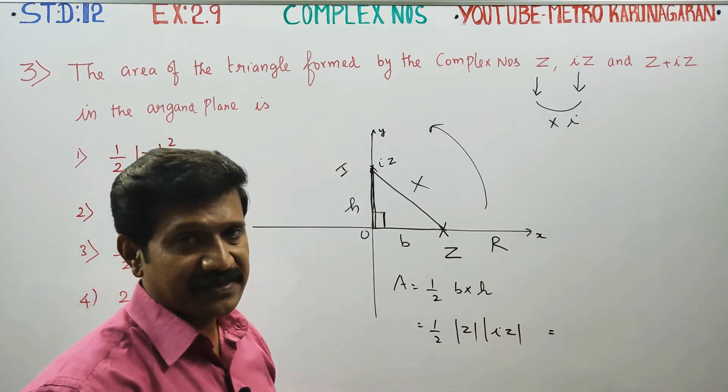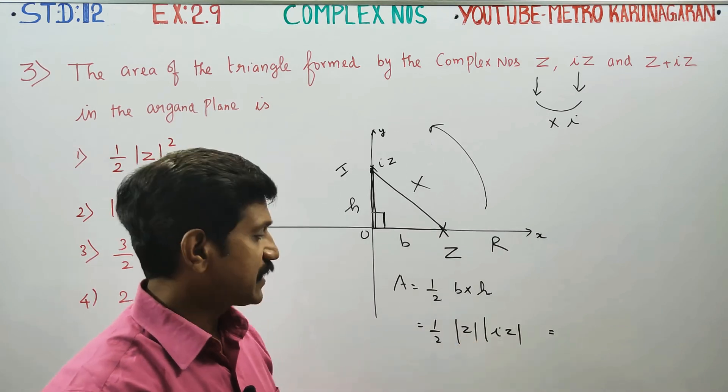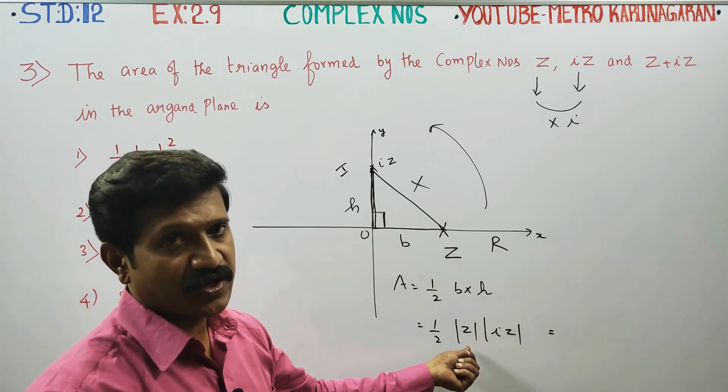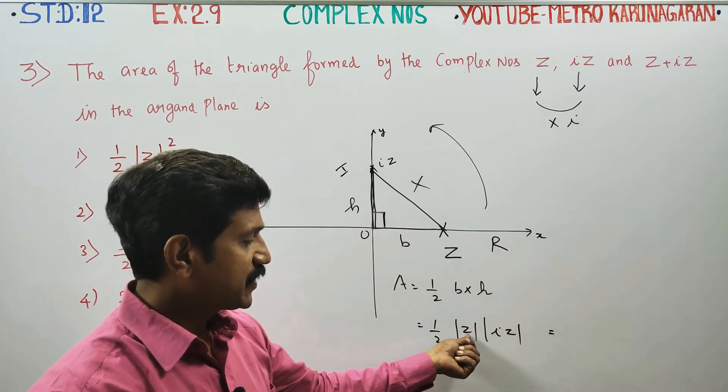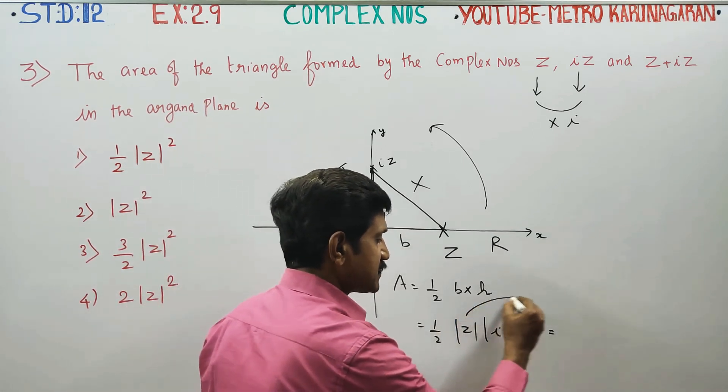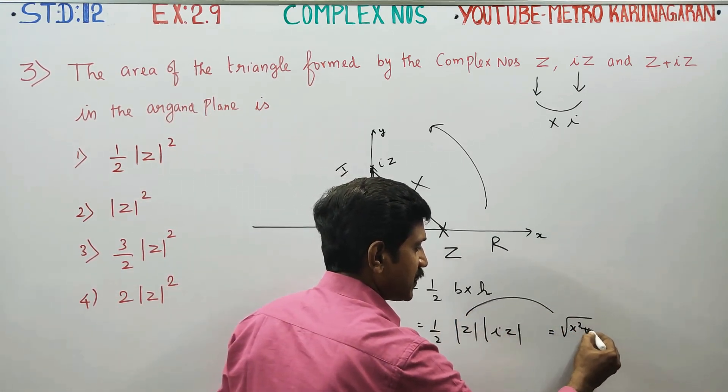One complex number is x plus iy. Square root is x square plus y square. Right? Modulus of IZ, for example, modulus of IZ, square root of x square plus y square.